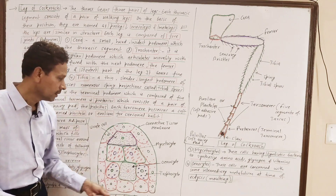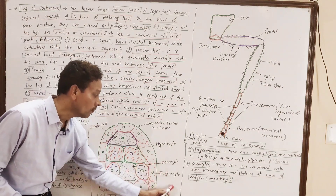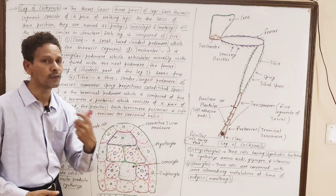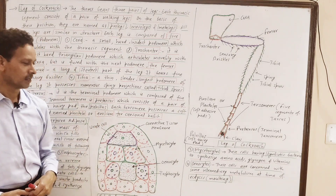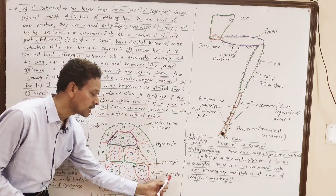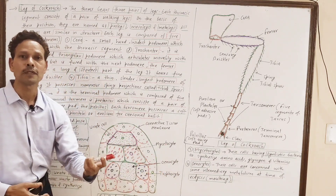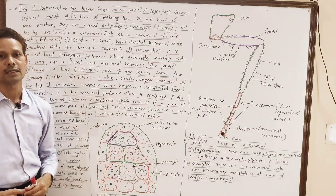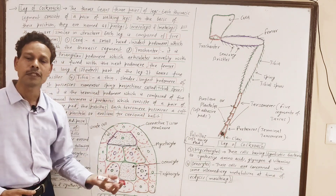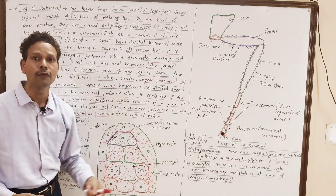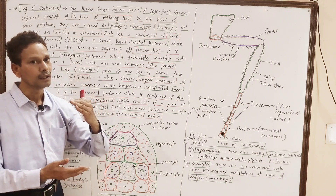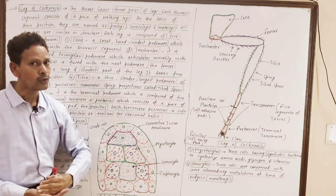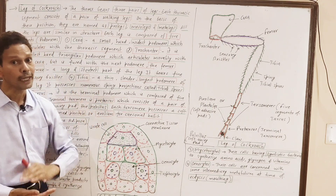The third type of cells are trophocytes. These trophocytes are special cells which store nutrient substances — food substances like fats, glycogen, and proteins.